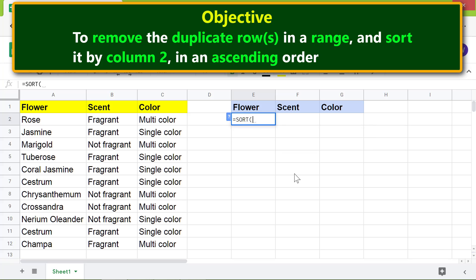Okay, type U-N, select UNIQUE. For range, click this cell and shift-click this cell.